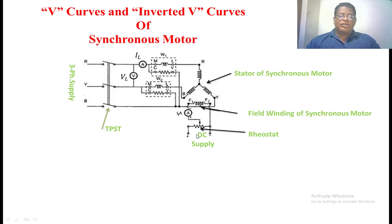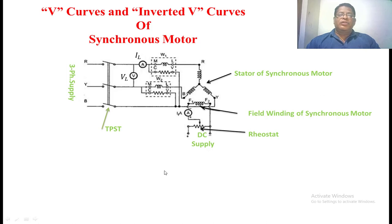By changing the potential divider, the field current passing through the synchronous motor will be changed. By changing the field current, the armature current of the synchronous motor will change. We note down the readings of the voltmeter, ammeter, and wattmeter. In this manner, we take 10 to 15 readings. We are conducting this test at no load only, but in a similar manner we can conduct the same test at half load and full load as well.